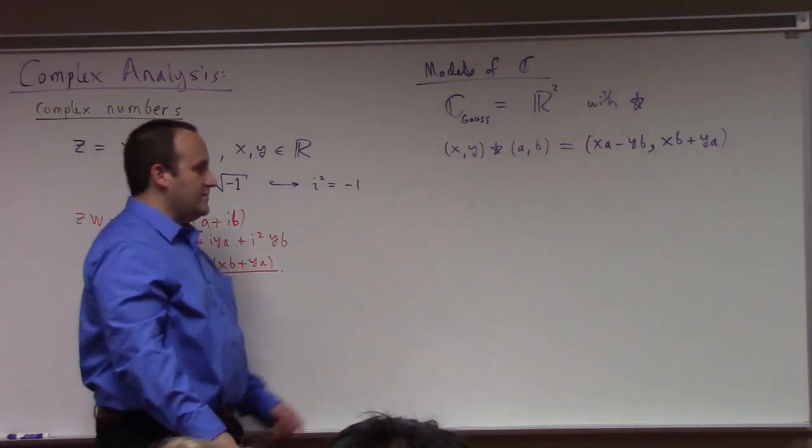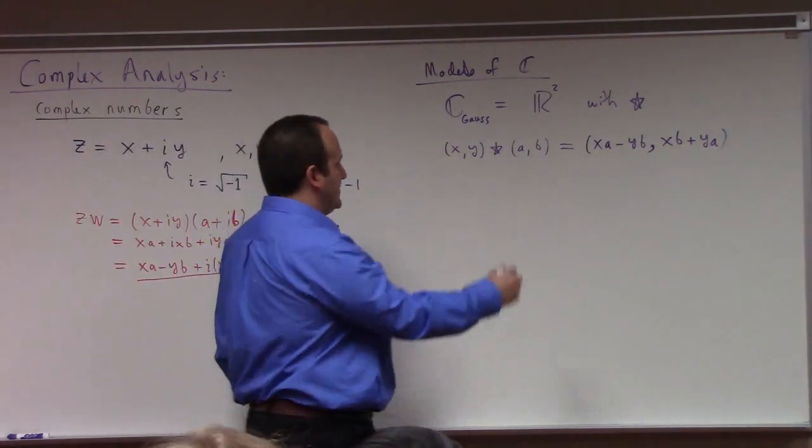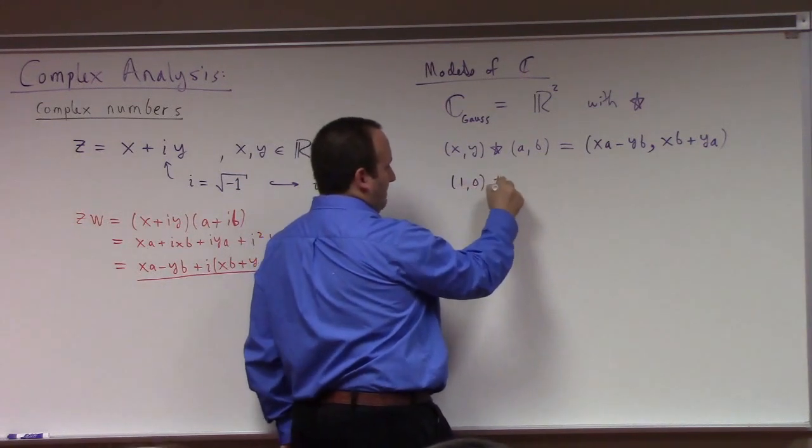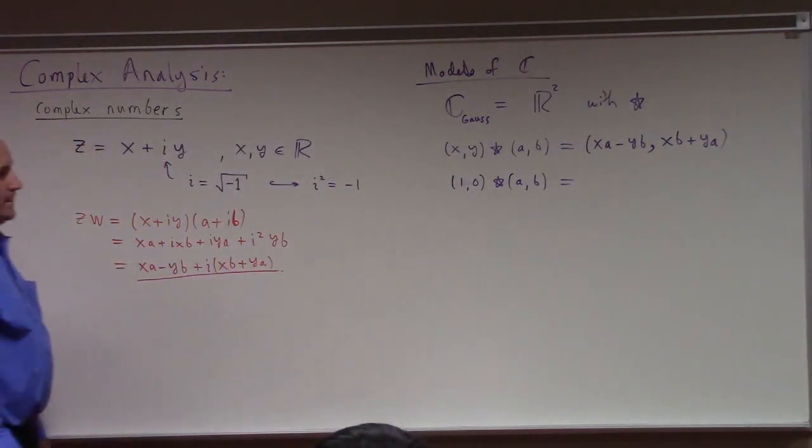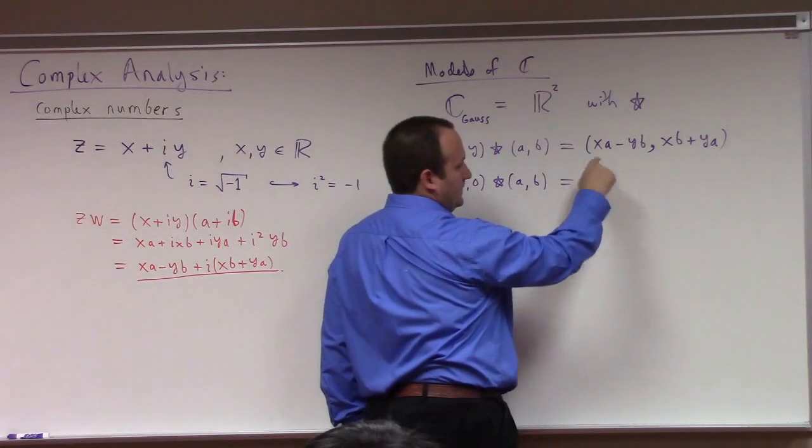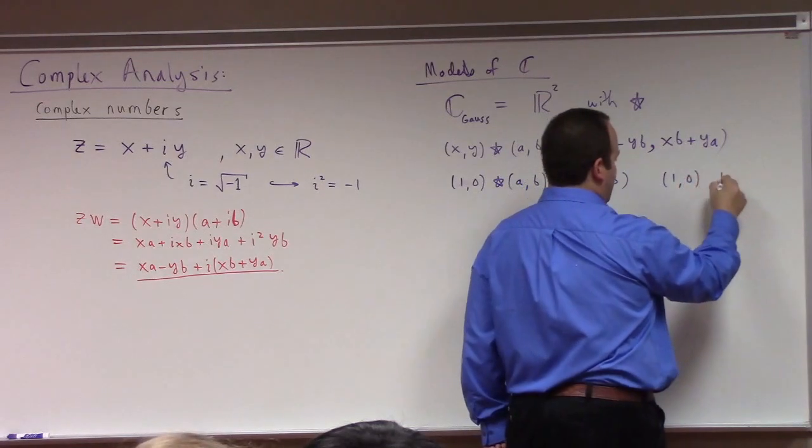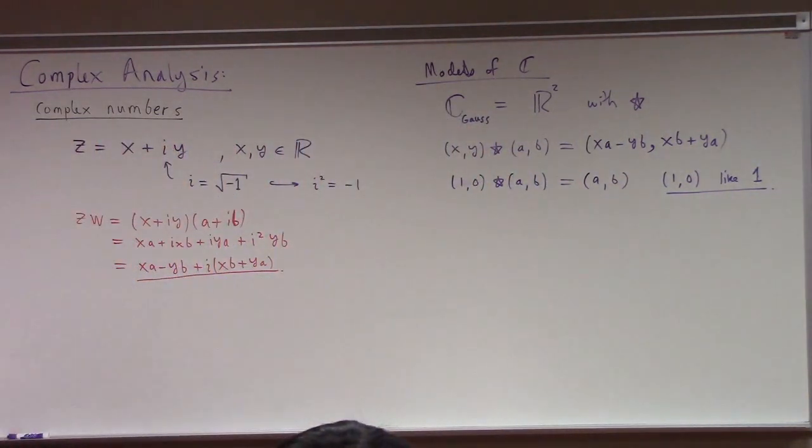For example, what's, if you use this viewpoint, what does i look like? Well, if you look at this. So here's zero. Well, first of all, what's one look like? If I look at one comma zero, star a comma b, what do I get? Let's see here. So x is equal to one, y is equal to zero, right? So the y terms are gone. Yeah, a, b. So one, zero is like one, right? It's serving as the multiplicative identity with respect to the star operation.